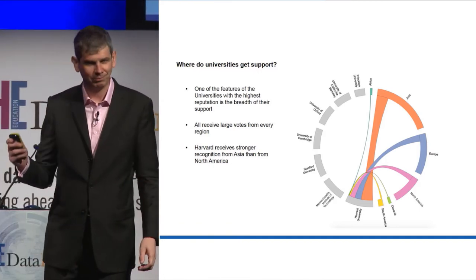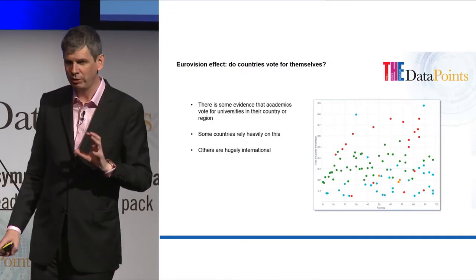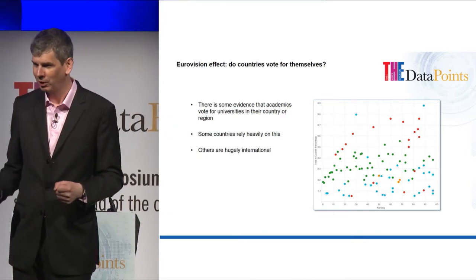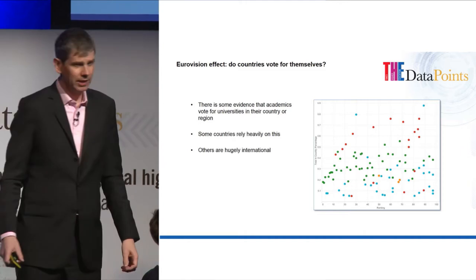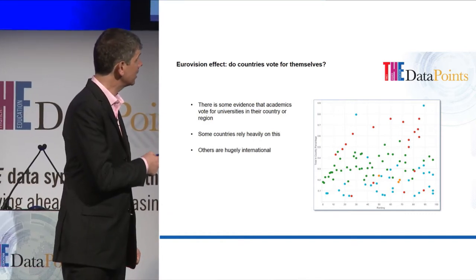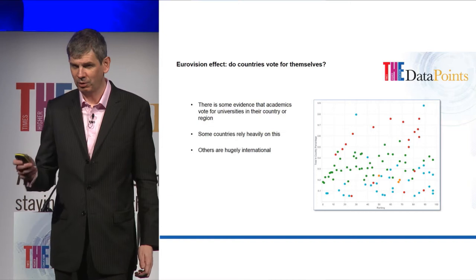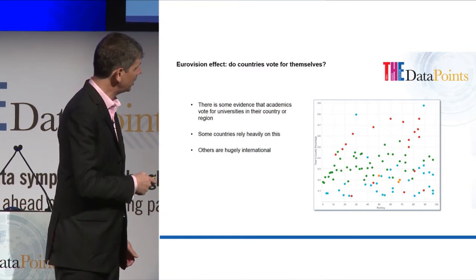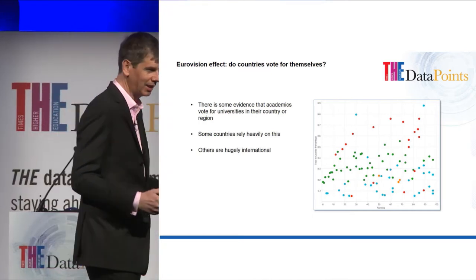This is a plot which tests out what I call the Eurovision theory — yes, you get some votes, but don't you get most of your votes from your home country? On the x-axis is where universities came just looking at reputation in our ranking system. On the y-axis is the percentage of votes they receive from within their own country. The different colors represent different continents. The blue continent typically gets many votes from outside their own countries — anyone want to guess which continent that is?